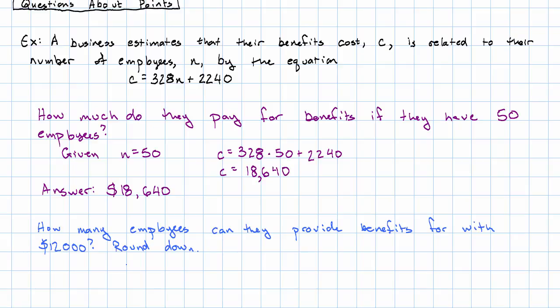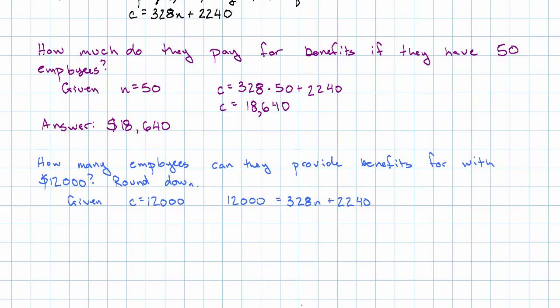It's giving us a value of C, a total amount of benefits cost they can pay, and asking us to find how many employees, asking us to find N. So here we're given C is 12,000, and we'll have 12,000 equals 328N plus 2240. What should we do?